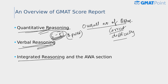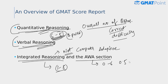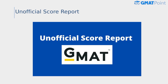Looking at the IR and AWA sections — the integrated reasoning section is not computer adaptive; only the quant and verbal reasoning sections are computer adaptive. Your score in the IR section ranges from 1 to 8 with one-point increments, and the AWA section score ranges from 0 to 6 with 0.5 increments.